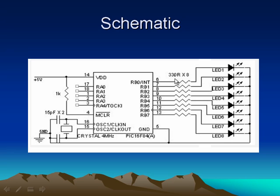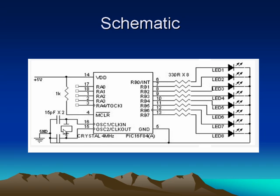I used 330 ohm resistors to protect the LEDs from high voltage, because the microcontroller outputs five volts to the LEDs. If you don't use resistors it will be harmful to the LEDs. I also connected a crystal oscillator to the microcontroller for correct operation. The crystal is a very stable and inexpensive oscillator that you can find easily.